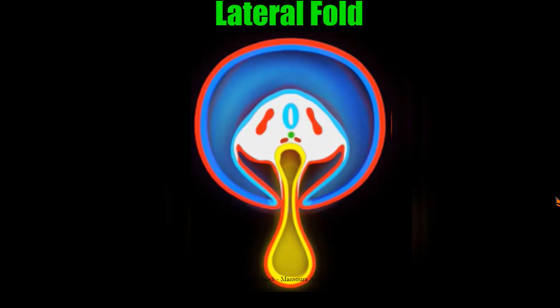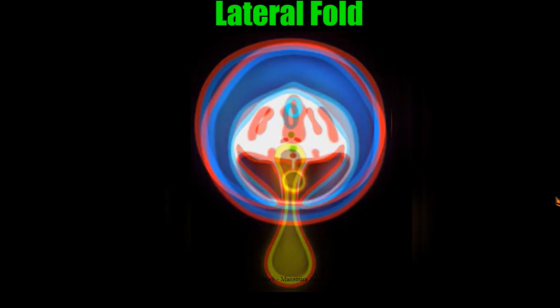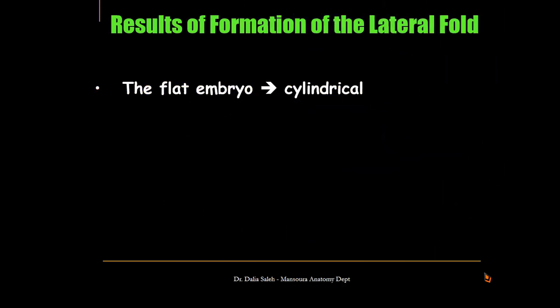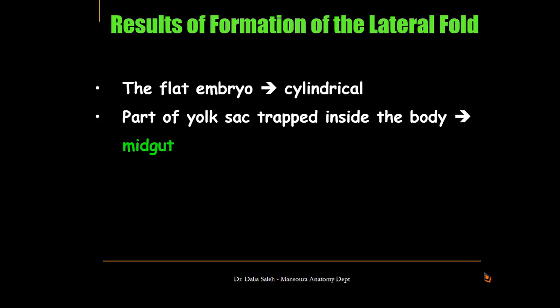The two edges of the amniotic cavity approximate each other and fuse. Part of the yolk sac is already trapped inside the embryo and part of it is still outside. The embryo now lies within the amniotic cavity. So, what are the results of formation of the lateral fold? The flat embryo is now cylindrical in shape, and part of the yolk sac will be trapped inside the body of the embryo to form the midgut.